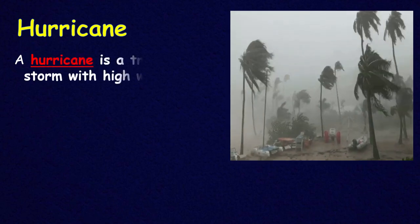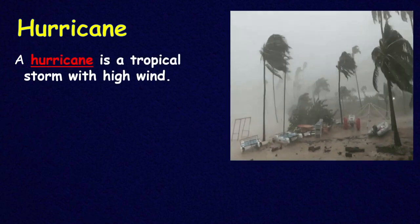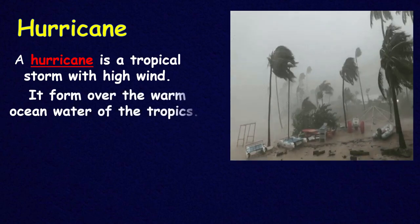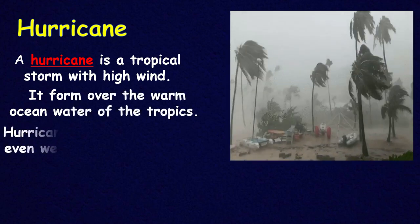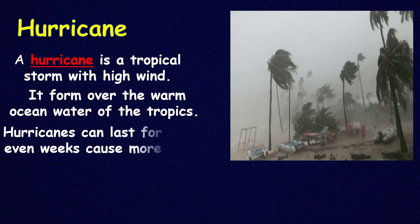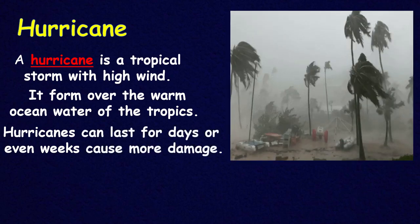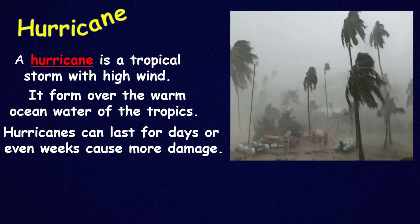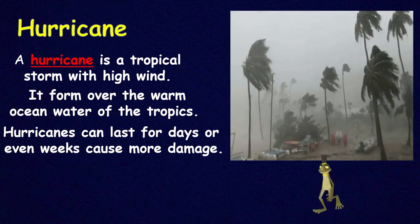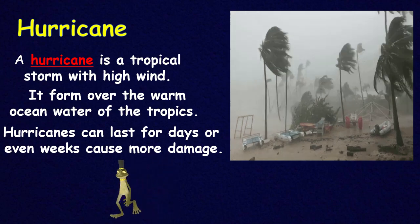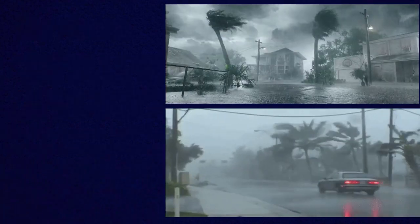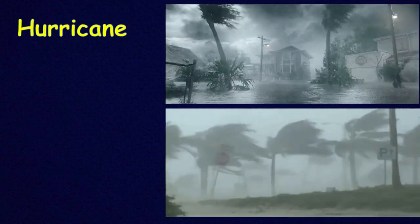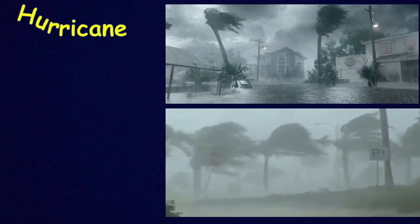The next one is also a storm — it's a hurricane, a tropical storm with high winds. It forms over warm ocean water in the tropics. A hurricane can last for days or even weeks and cause a lot of damage, especially if it stays more than a week.